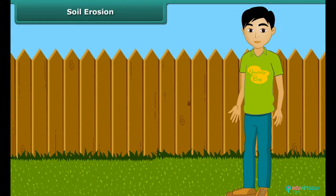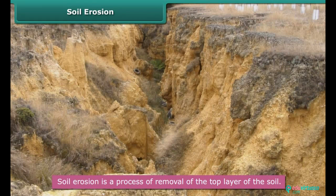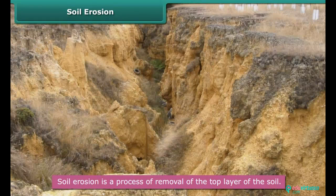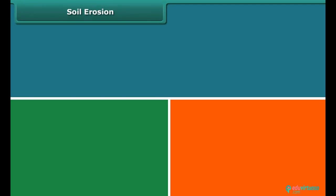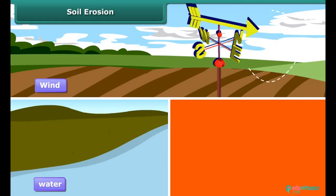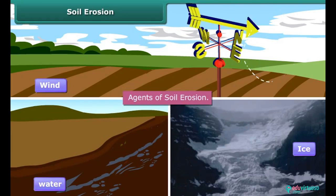Soil erosion: Can you explain what is soil erosion? Well, soil erosion is a process of removal of the top layer of the soil. But what causes soil erosion? Basically it is caused by the action of wind, water and ice. These are the agents of soil erosion.